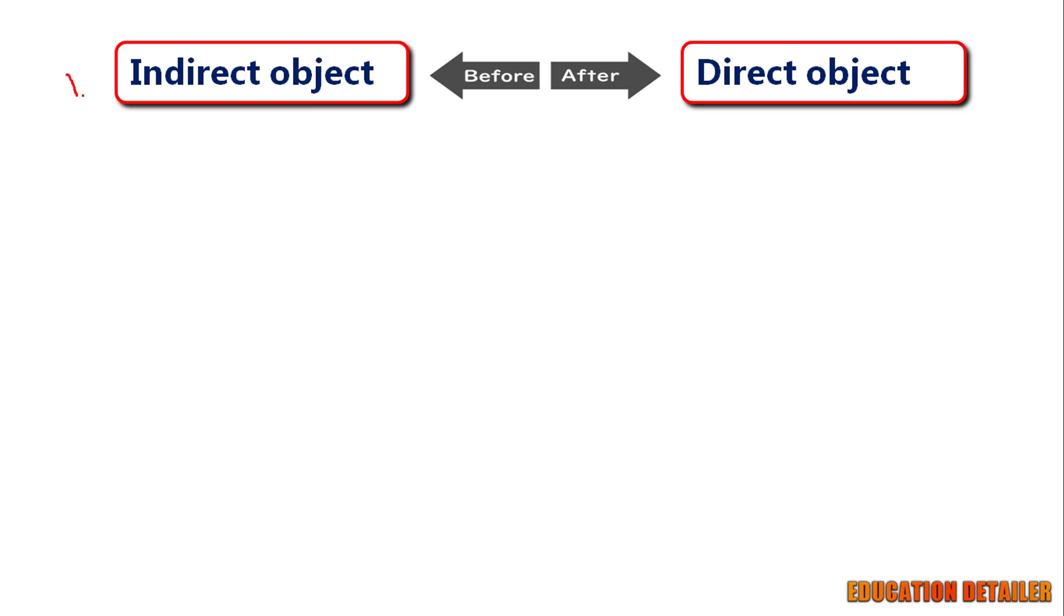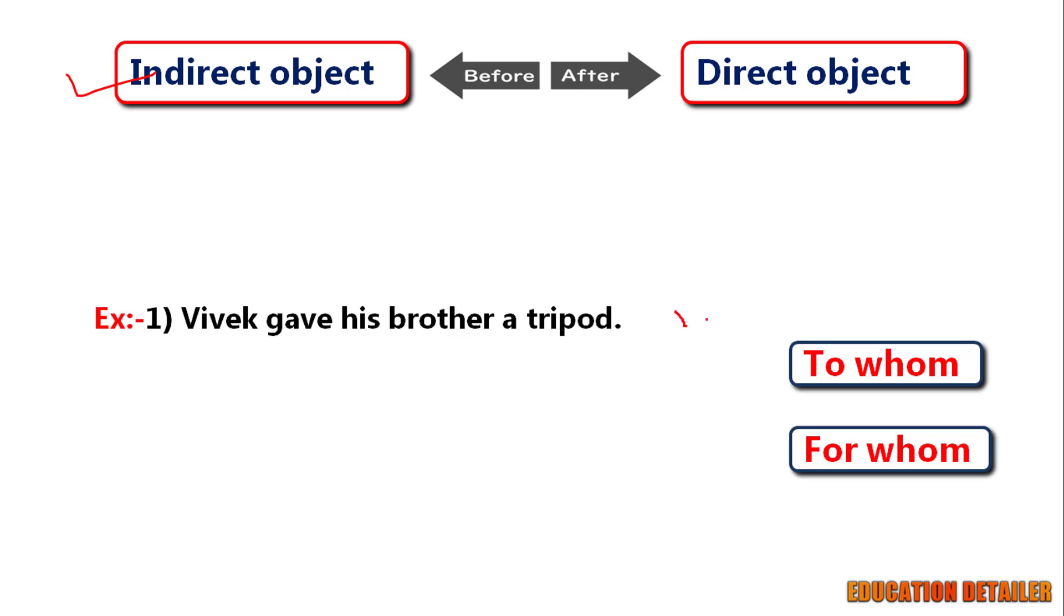You can find out the indirect object by simply asking to whom or for whom. See some examples. Vivek gave his brother a tripod. Here, Vivek is a subject.